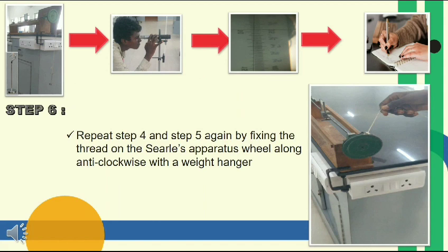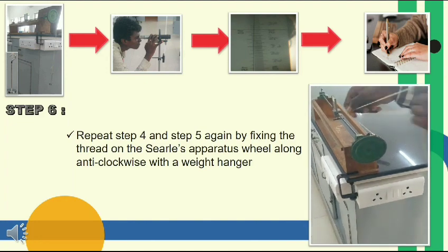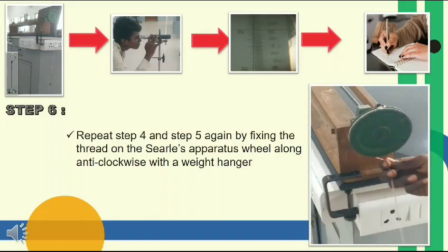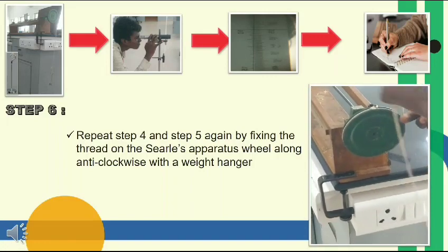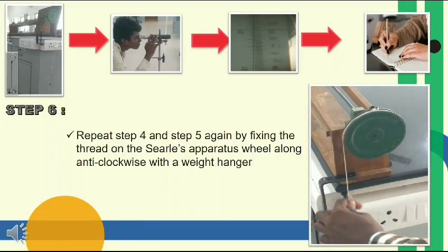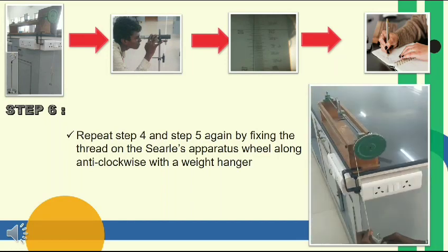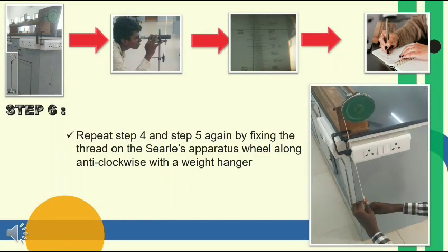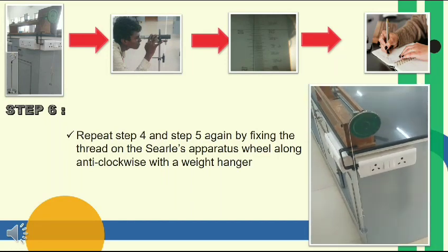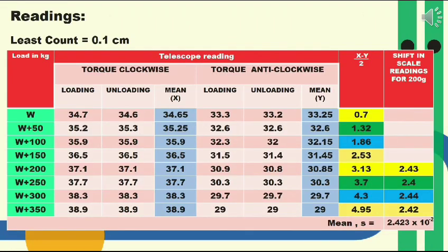Repeat steps 4 and 5 by fixing the thread on the Sewell's apparatus wheel along the anti-clockwise direction with the weight anchor. Tabulate the noted readings.